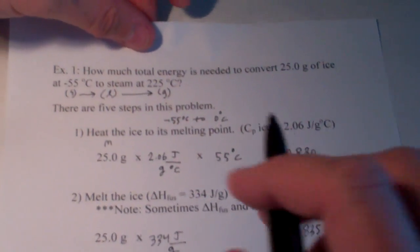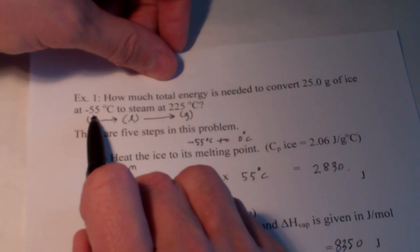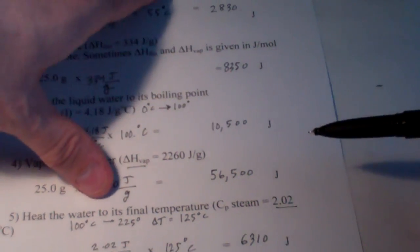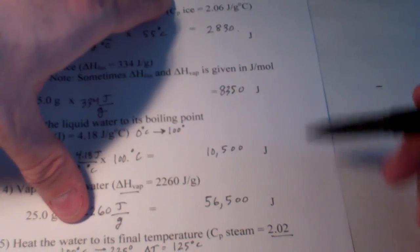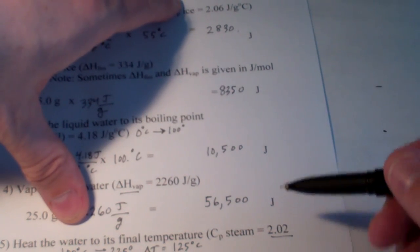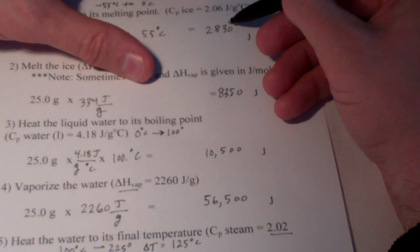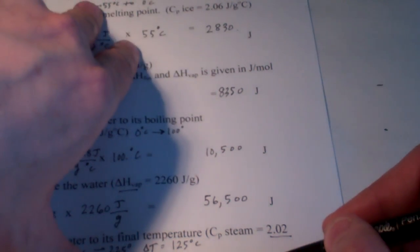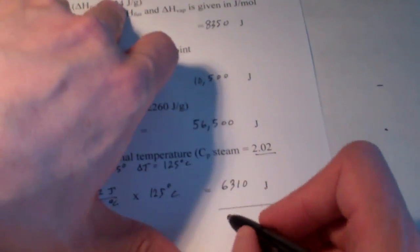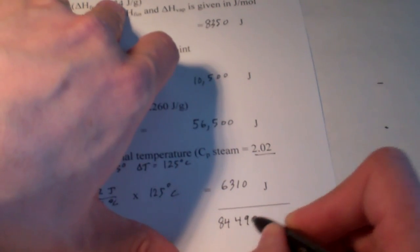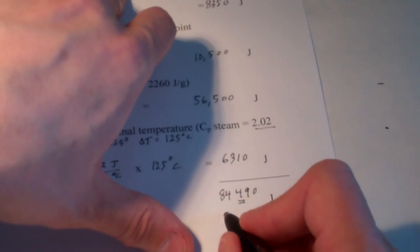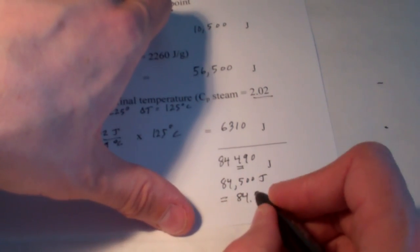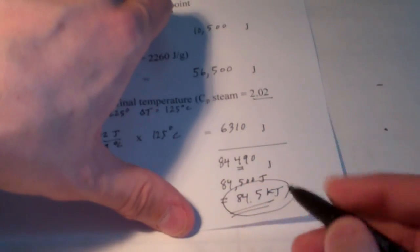So, the total energy required to take my water from negative 55, ice, to water steam at 225, will be the sum of each of these steps. Now, when I round this off, I have to be careful with my significant figures. Remember, when I add, I look at the decimal place, or to where the answer is rounded. In this case, I have to go with the least accurate, which is to the nearest hundred. So, when I add these up, I get 84,490. But, if I round to the nearest hundred, I'm going to round that off to 84,500 joules, which is the same as 84.5 kilojoules of energy for that process.